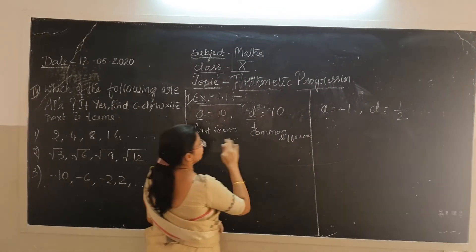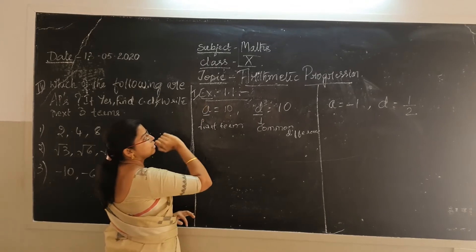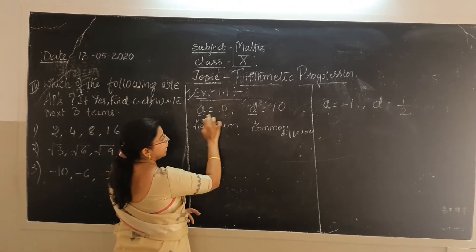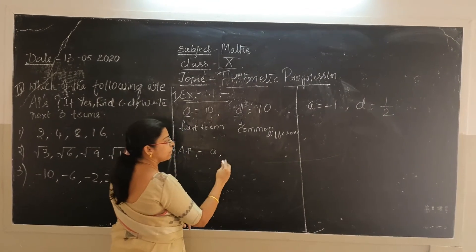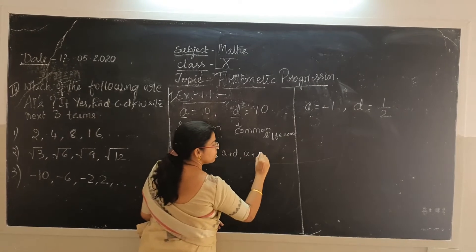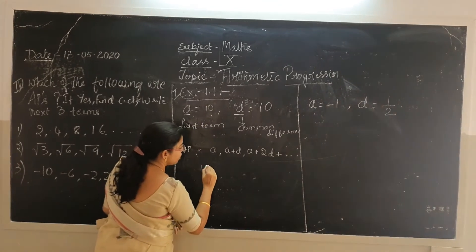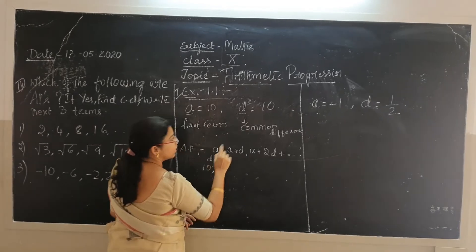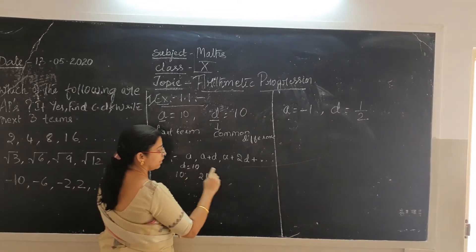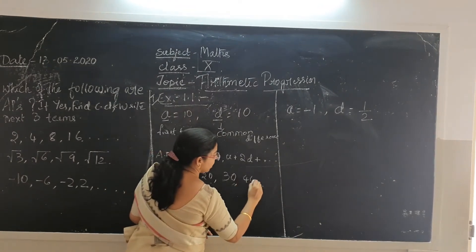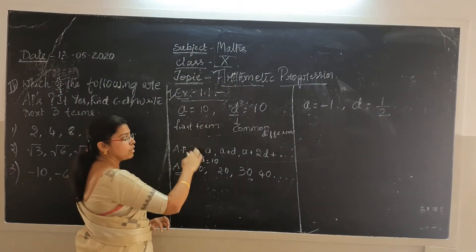With the values of A and D, we can write the AP. The first term is A, the second term is A plus D, the third term is A plus 2D, and so on. For example, if A is 10 and D is 10: the first term is 10, then 10 plus 10 equals 20, then 20 plus 10 equals 30, then 30 plus 10 equals 40, and so on. This is the AP for that given problem.